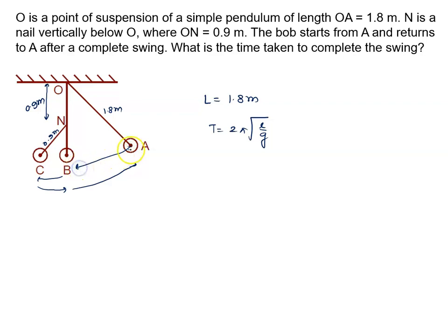Time taken to move from A to B is 1/4 of the time period. So we will say 1/4 into 2π root L by g, which we will say equals π/2 root L by g.